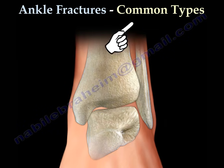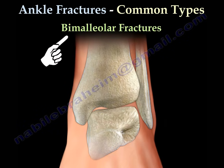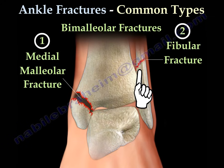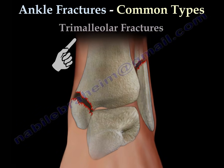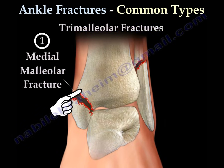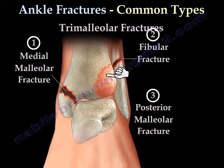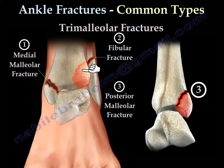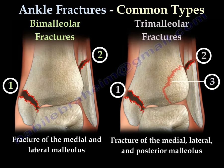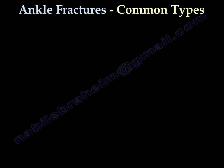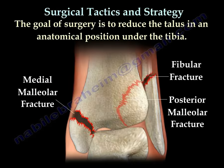Common types of fractures. Bi-malleolar fracture — you will get the medial malleolus and the fibular fracture. Tri-malleolar fracture — you will get the medial malleolus, the fibular fracture, and the posterior malleolus. These two types are the most common fractures, although an isolated fibular fracture is the commonest injury we see.